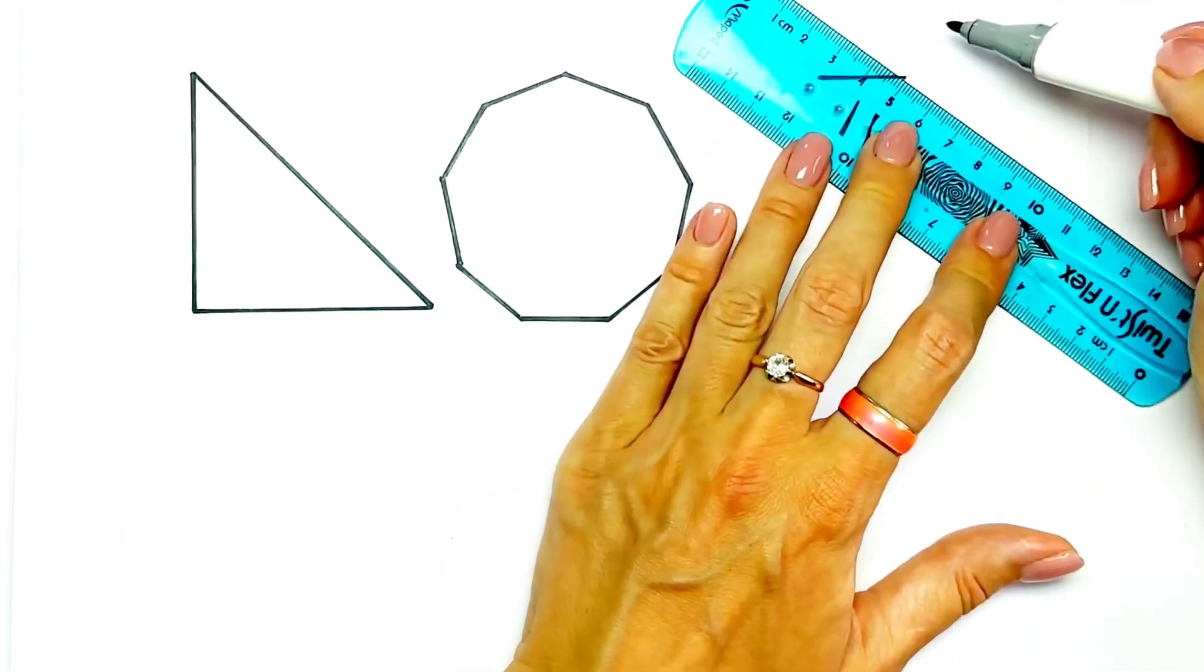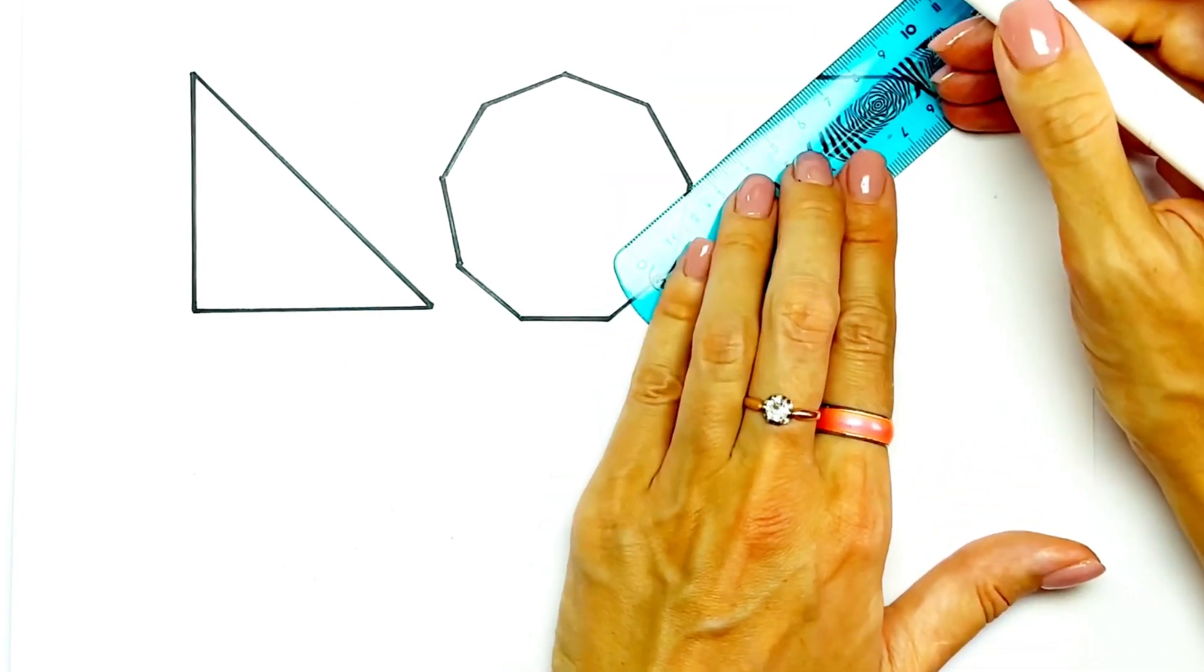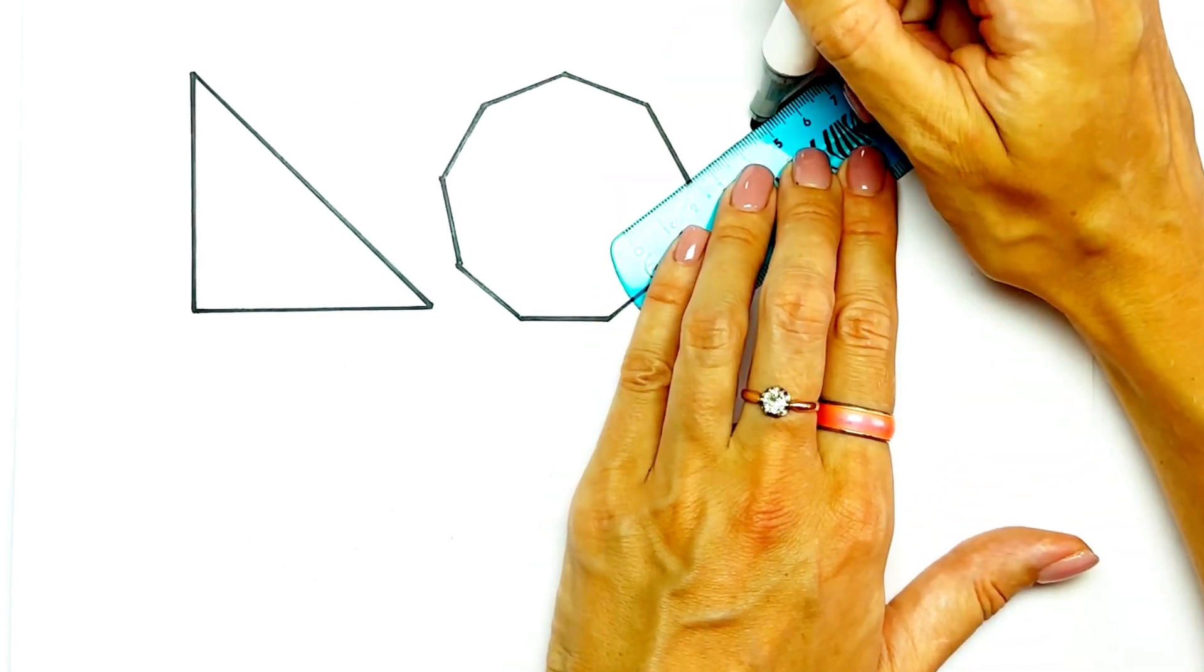Next one is decagon. Decagon has ten angles. Quite difficult shape.